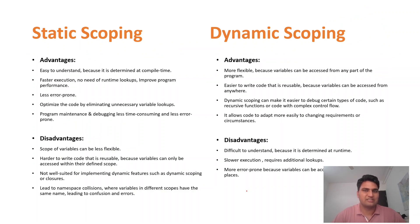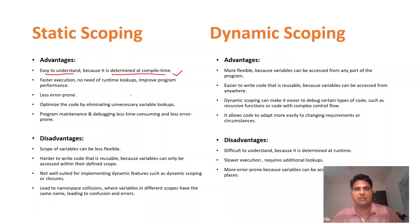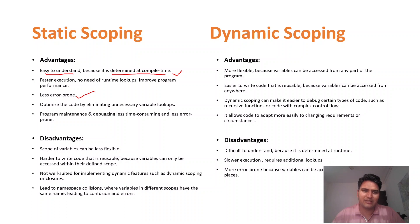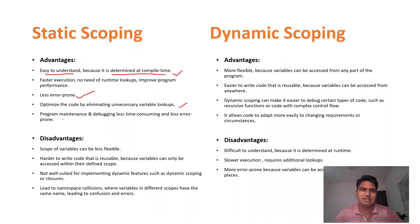Now there are some advantages and disadvantages. For static scoping: it is easy to understand, and it is determined at compile time, so the execution time is faster — there is no need for runtime lookups, which improves overall performance. It is also less error-prone because the scope is decided in advance, reducing chances of unexpected values. The compiler can optimize the code because the scope is predefined. Maintenance, debugging are easier, and it is less time-consuming.